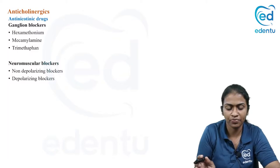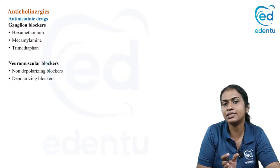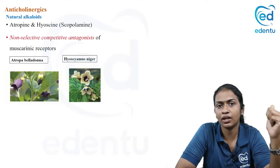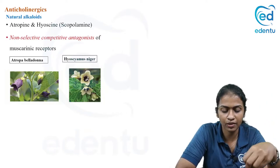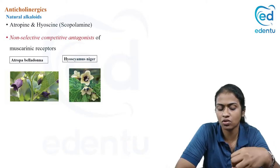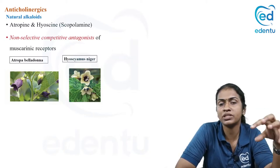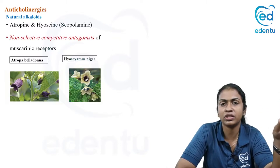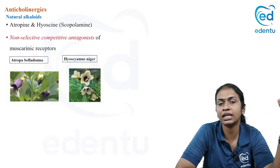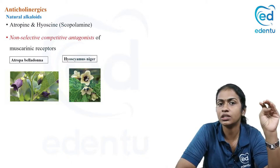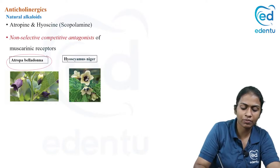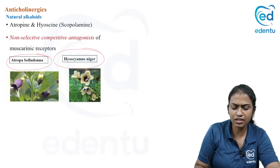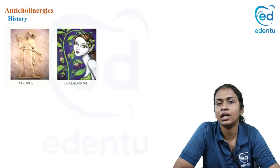The natural anti-muscarinic agents are hyoscine and atropine, derived from plant sources. The other name for hyoscine is scopolamine. They are non-selective competitive blockers of muscarinic receptors — non-selective means they block all subtypes M1, M2, and M3, and they compete with acetylcholine for the receptor site. Atropine is derived from Atropa belladonna and hyoscine from Hyoscyamus niger.